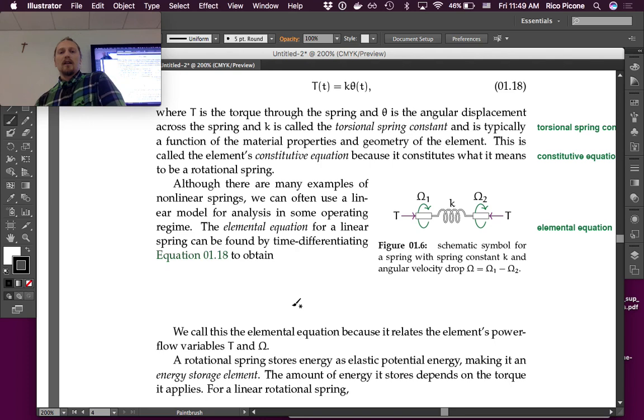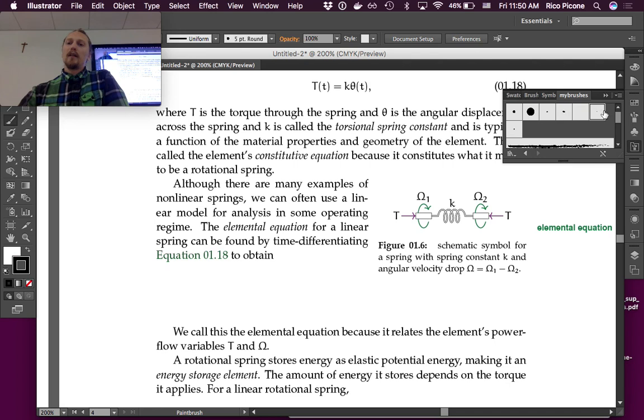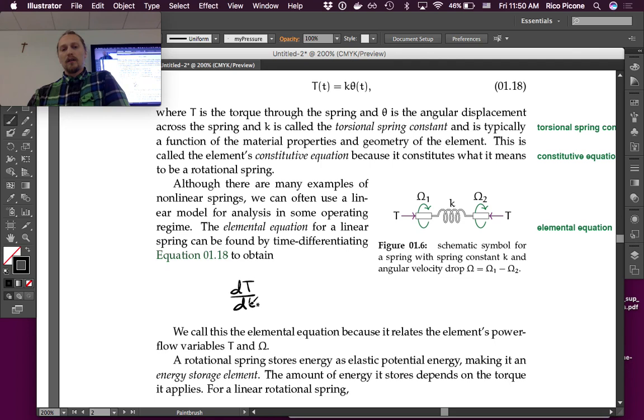This means the element's constitutive equation, if it's linear, is just equation 1.18 because that's what it means to be a rotational spring. There are many examples of nonlinear springs. We can often use a linear model in some operating regime. The elemental equation for a linear spring can be found by taking the time derivative of 1.18, and that's dT/dt, which sounds funny, but different T's, right?